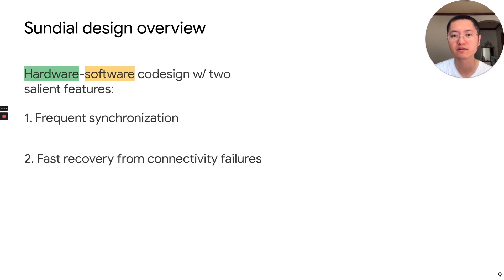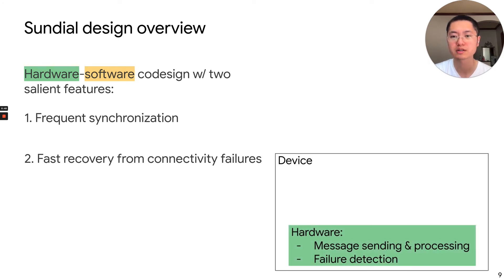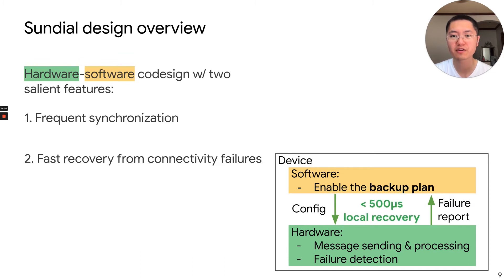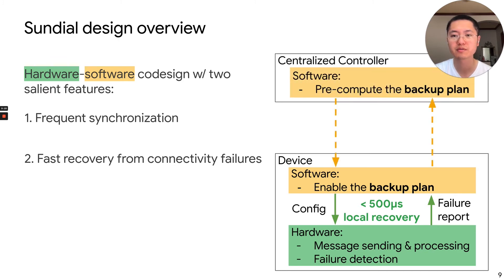So we designed Sundial to achieve the two key requirements based on a hardware-software co-design. To have frequent synchronization, we implement in the hardware the message sending, processing, and also failure detection. To achieve fast recovery from the connectivity failures, we use a software-hardware co-design. The intuition is that the hardware can report a failure very quickly to the local software. And the software can immediately enable a backup plan by reconfiguring the hardware. And this is very fast because it's purely local. The backup plan is pre-computed by the controller. This can be slower, but it's not on the critical path.